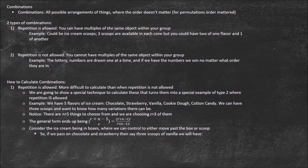Then there's repetition not allowed, when you cannot have multiples of the same type within your group. An example is the lottery — numbers are drawn one at a time, and if we have the numbers, we win no matter what order they're in. So this is a combination because you don't need them in the exact order; you just have to have the numbers.